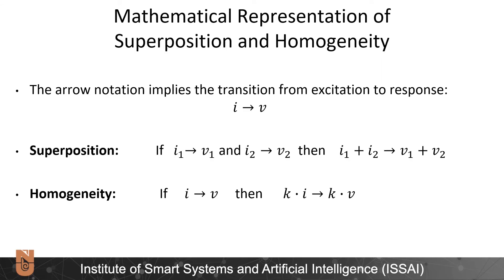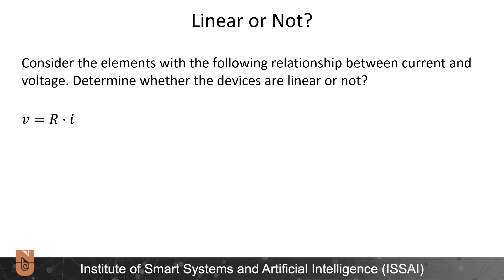Let's look at the mathematical representation of superposition and homogeneity. The arrow notation implies transition from excitation to response, or from input to output. In superposition: if input I1 gives output V1 and input I2 gives output V2, then applying I1 plus I2 gives output V1 plus V2. In homogeneity: if input I1 gives response V, then multiplying the input by constant K gives output K times V. If a system satisfies both superposition and homogeneity, then that system is a linear system.